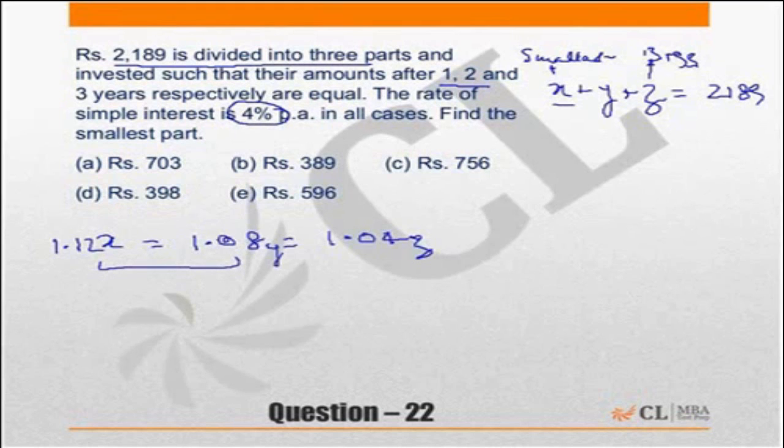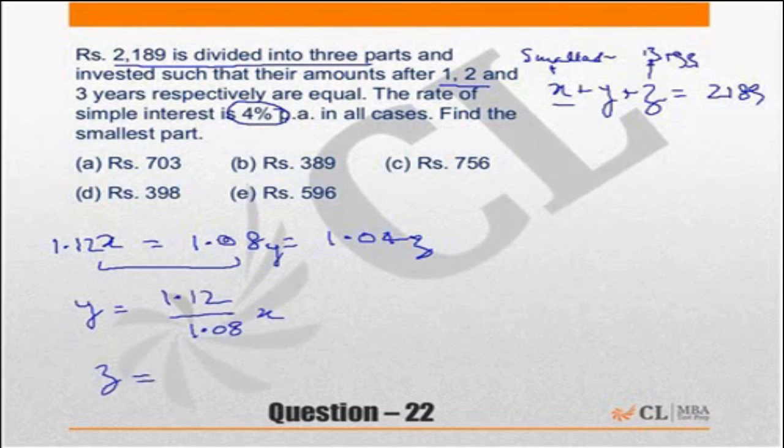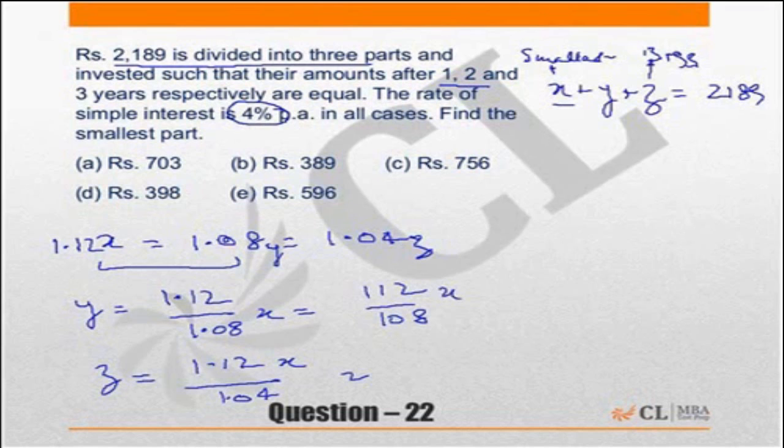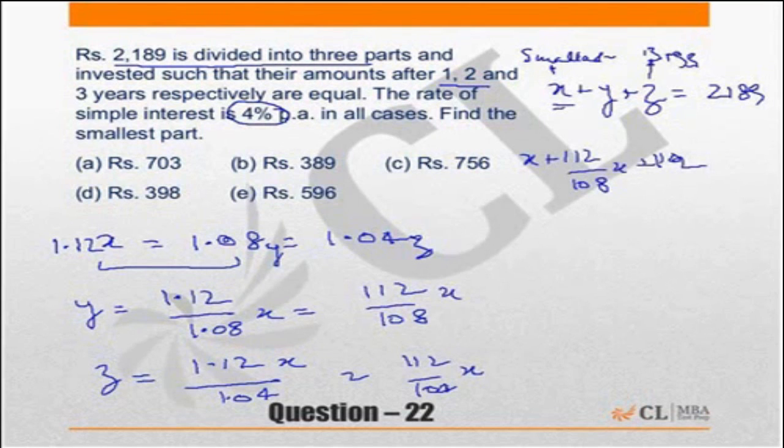Now look at these two equations. x, y, z. y is nothing but 1.12 upon 1.08 times x. And similarly z is nothing but 1.12x upon 1.04. Which is nothing but 112 upon 108 times x. And similarly this is equal to 112 upon 104 times x. So you have to substitute these values as x plus 112 upon 108 x plus 112 upon 104 x is equal to 2,189. So this is the question which you have to solve now.